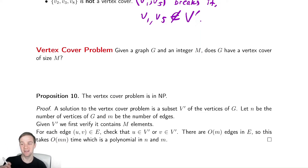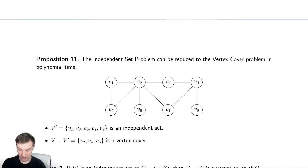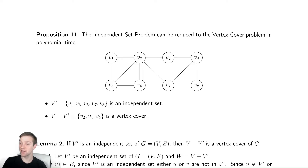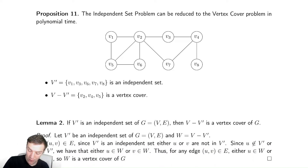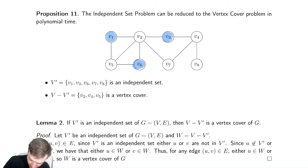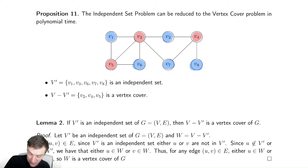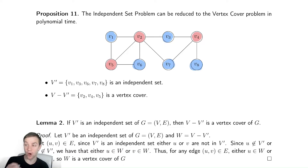Now we need to show we can do a reduction. Our reduction is going to be reducing the independent set problem to the vertex cover problem. Let's suppose we have an independent set like V1, V3, V6, V7, V8. Let's check that this is an independent set — none of these blue vertices touch any other blue vertices. So the blue nodes are an independent set.